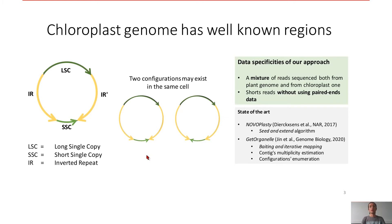First, chloroplast genome has well known regions. Here we can see there are four regions: long single copy, short single copy, and two repeats. Here we will focus on inverted repeats.